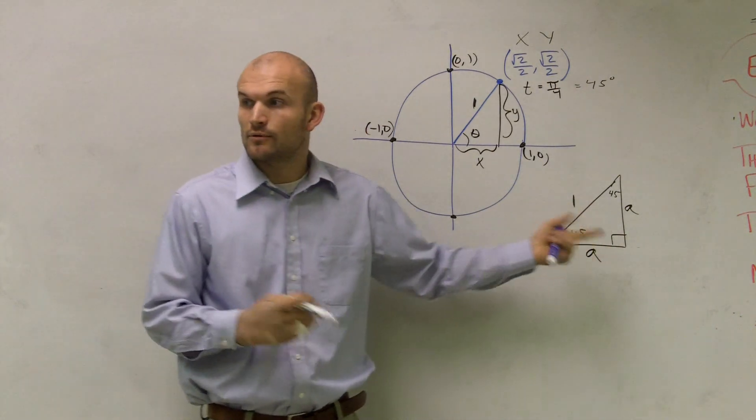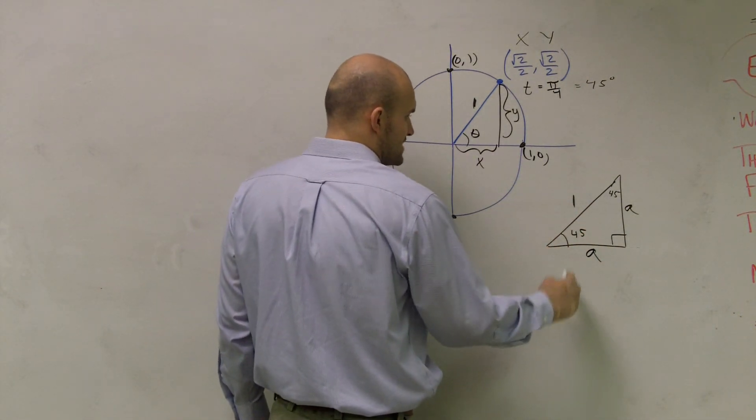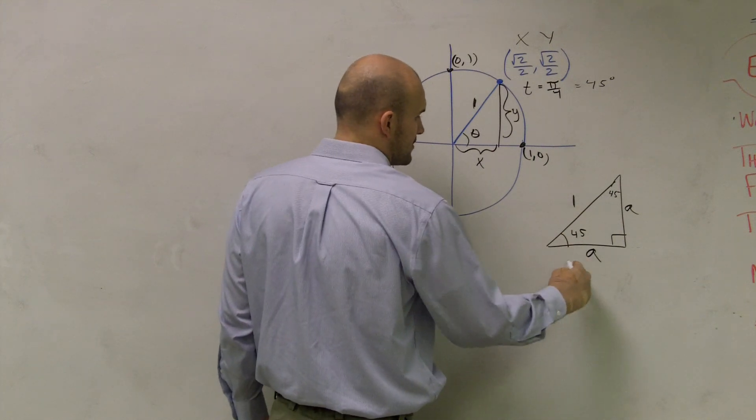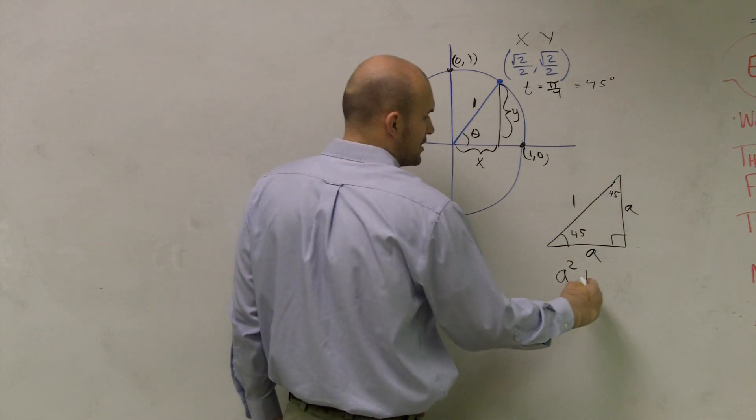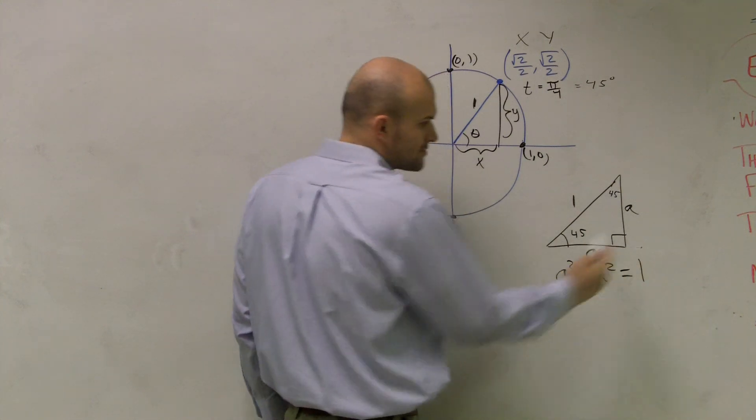If I want to find the value of A, I could use the Pythagorean theorem, which states that A squared—and we don't have a B squared, but your other side would be another A squared—equals 1 squared. Well, 1 squared is 1.